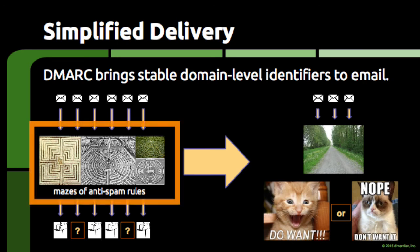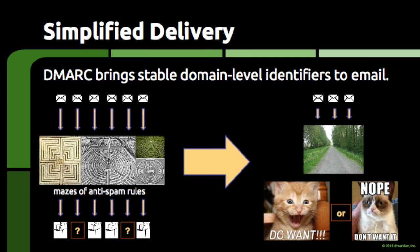This has caused email receivers to invest huge amounts of time, money, and man-hours in developing technology that filters out bad or unwanted email. These filters are effective against large quantities of spam, less effective against small batches of spam, and not very effective against individual messages that are unwanted, like spear phishing.